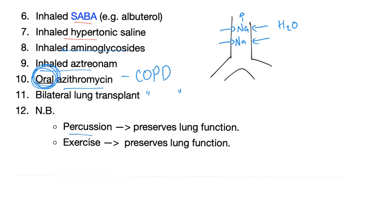Note: percussion can preserve lung function in cystic fibrosis patients. Just as you exercise muscles to prevent atrophy, you exercise the lungs through percussion — forcing them to be active instead of stagnant, waiting for Pseudomonas to damage them. Exercise can preserve lung function.